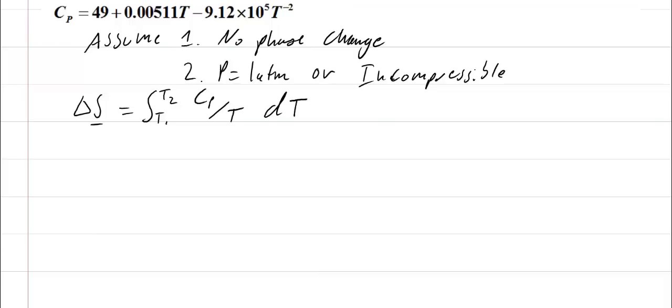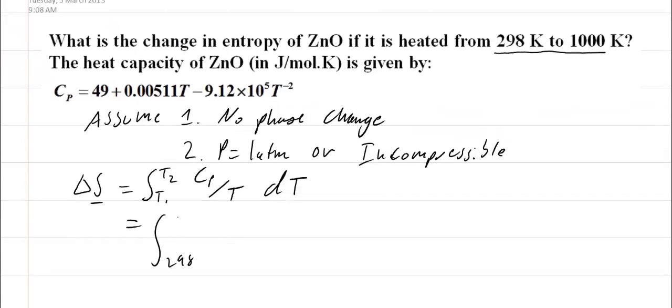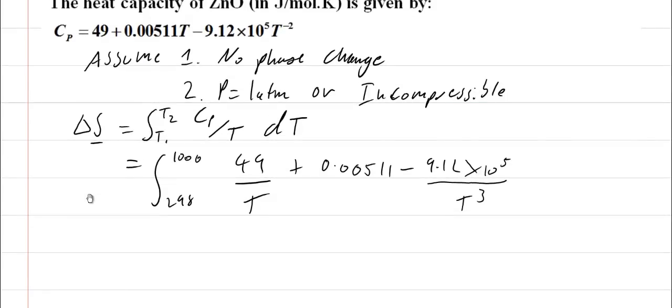Okay, so we need the heat capacity equation which we've got just above up here. So we're integrating from 298 Kelvin to 1000 degrees Kelvin. And so we've got 49 over T plus 0.00511 minus 9.12×10^7 over T^3.